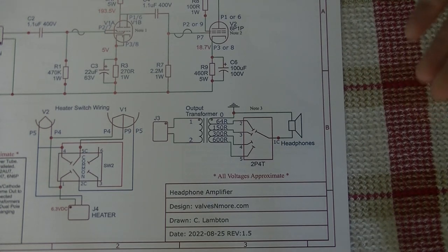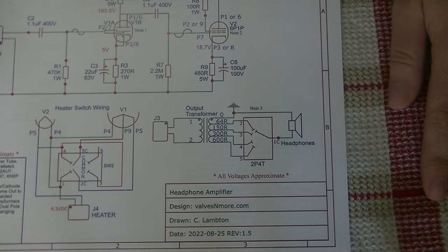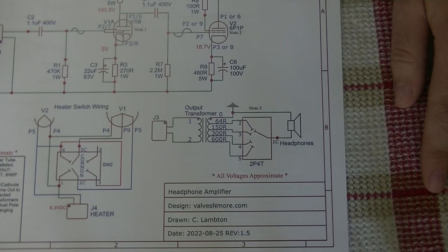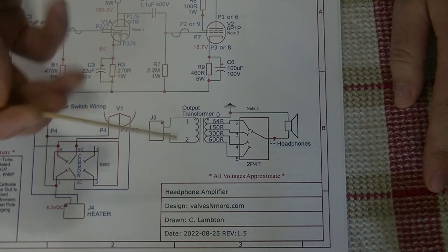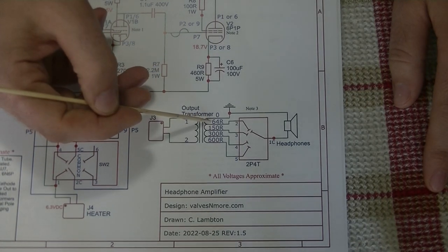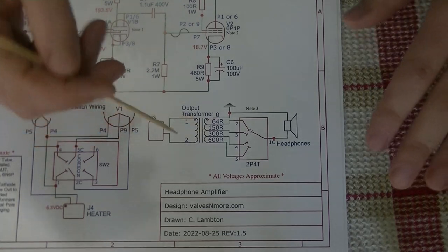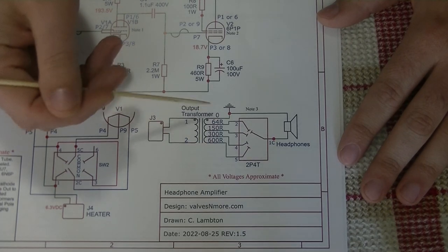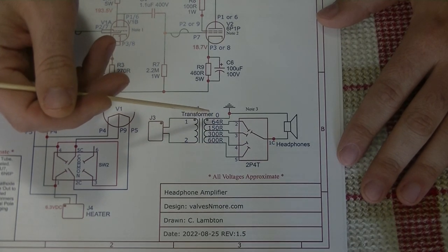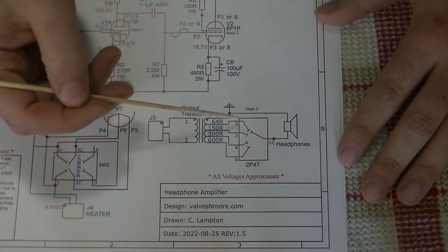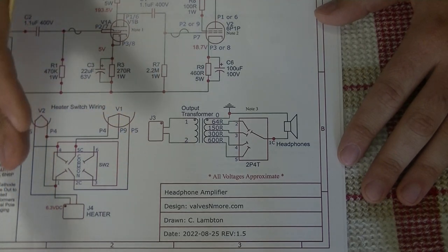So anyway, we didn't want to go OTL. We didn't want to limit the headphones that you could use with it, and we didn't want to sacrifice the sound quality. So we ended up going with an output transformer that has multiple output taps. The current one that we have has 64, 150, 300, and 600 ohms. This is going to cover the vast majority of headphones that are out there. We've got a really high-quality double-pull switch that allows you to switch both channels simultaneously, and so far it's been working absolutely great.